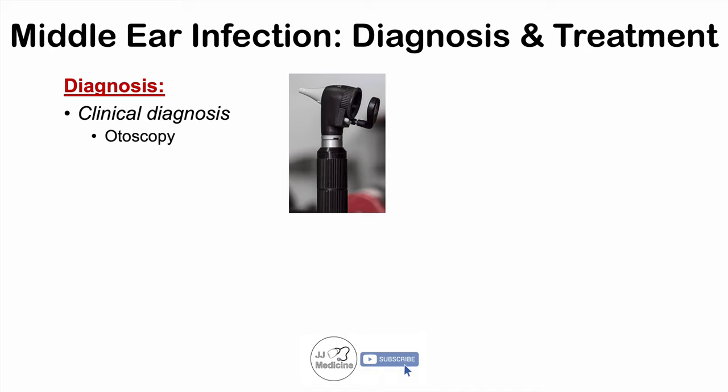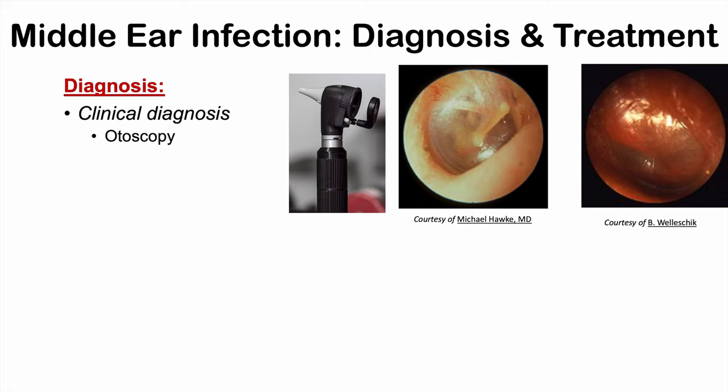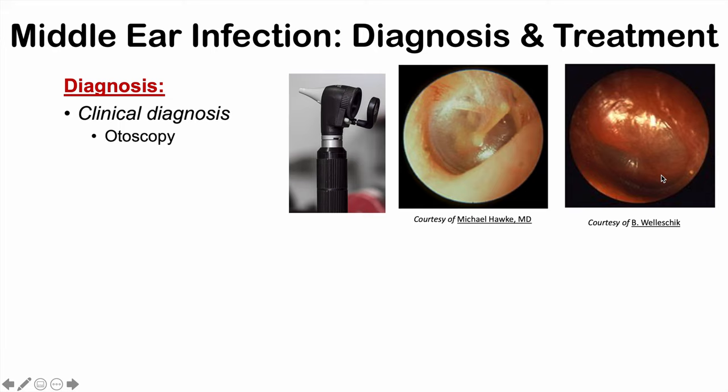Here is a normal eardrum, and here is an eardrum affected by acute otitis media. As you can note, the acute otitis media eardrum is bulging in appearance. Clinicians also look for perforations and color changes of the eardrum. Oftentimes a diagnosis can be made simply by looking at the eardrum.